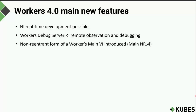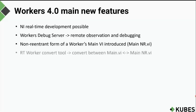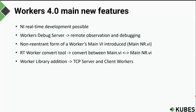To make debugging of worker QMH handlers on real-time targets possible with standard LabVIEW debugging tools such as probes and breakpoints, a non-reentrant form of a worker's main VI has been introduced, given the file name main_NR.vi. There is also a new RT Worker Convert Tool that allows you to convert a worker's main VI between reentrant and non-reentrant forms. TCP server and client workers have been added to the worker plugin library to stream data between applications running on different targets.